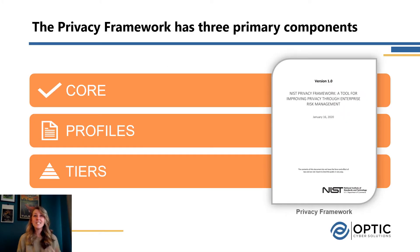To start off, what is the Privacy Framework and what's in it? It's broken down into three primary components. We have the core, the profiles, and the tiers.